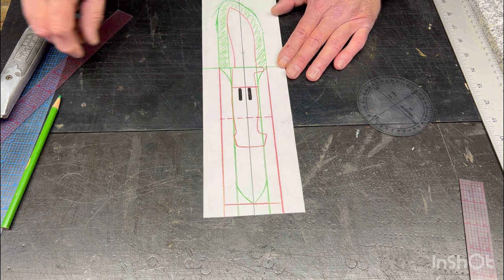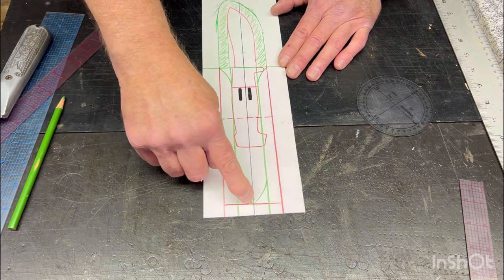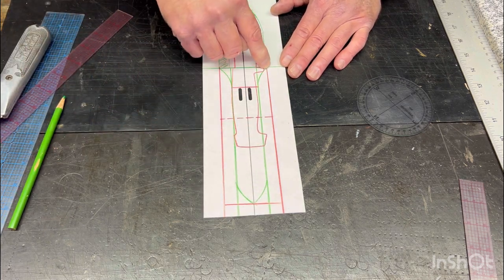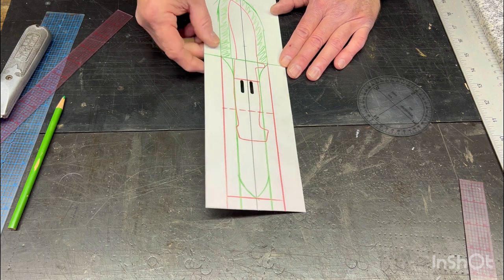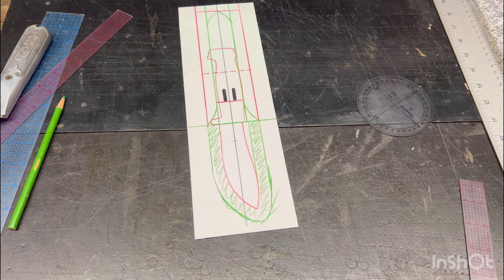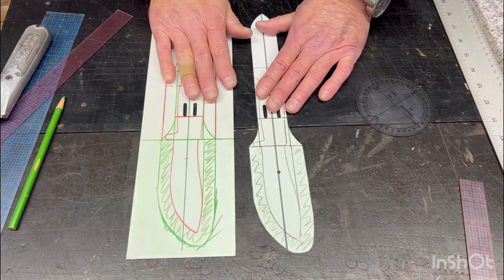Now it's nothing more than cutting out all your green lines on the outside of the face. And that is your sheath pattern.